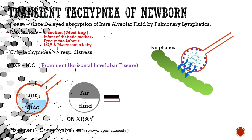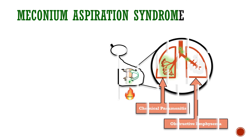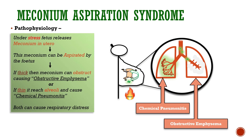Now let's come to the topic of meconium aspiration syndrome. Under stress, a fetus may release meconium in utero, and this meconium can be aspirated by the fetus. Two situations may arise: if the meconium is thick, it can obstruct the respiratory tract, causing obstructive emphysema. Or if the meconium is thin, it may reach the alveoli and cause chemical pneumonitis.